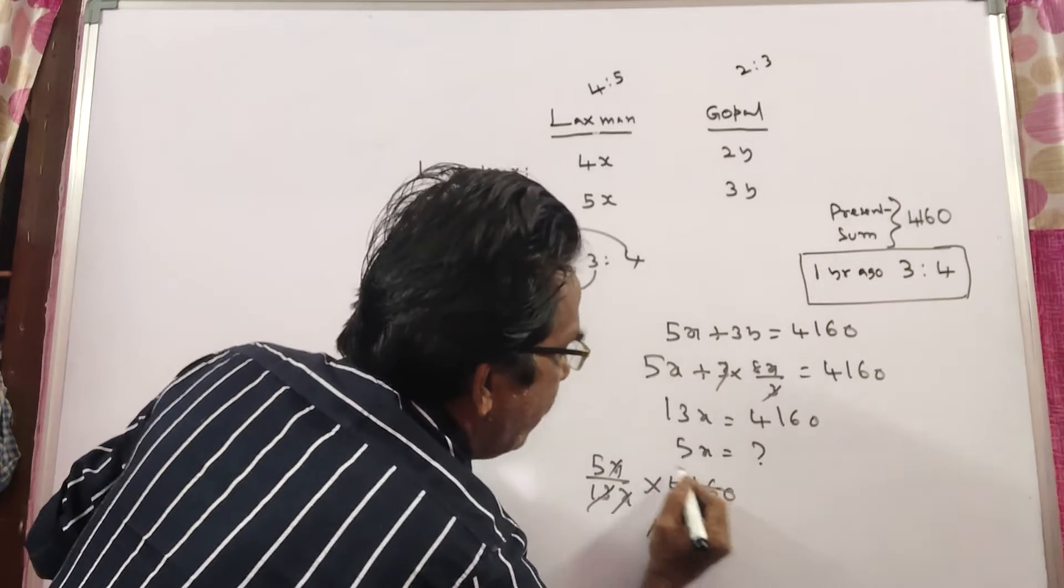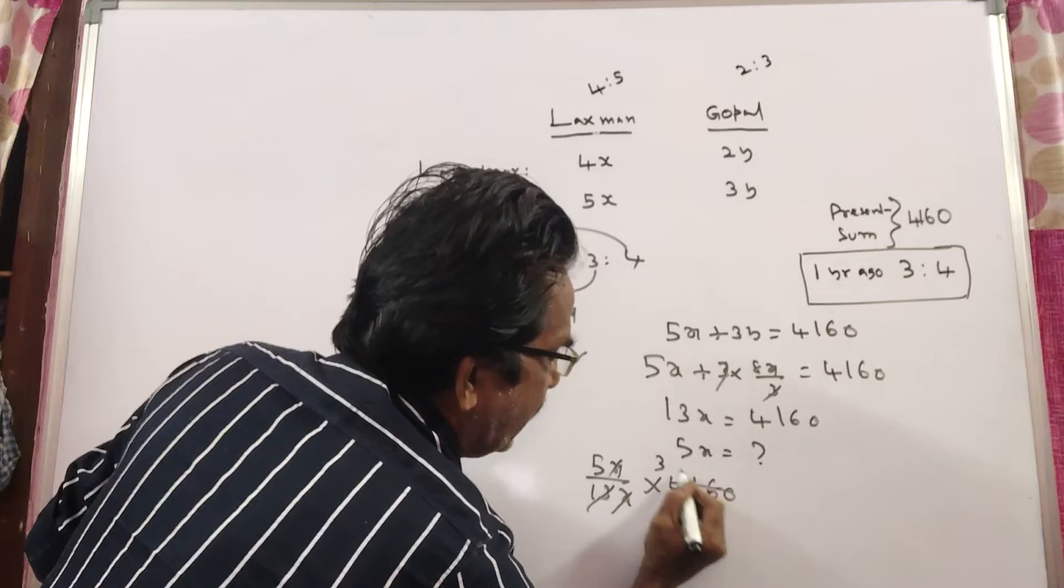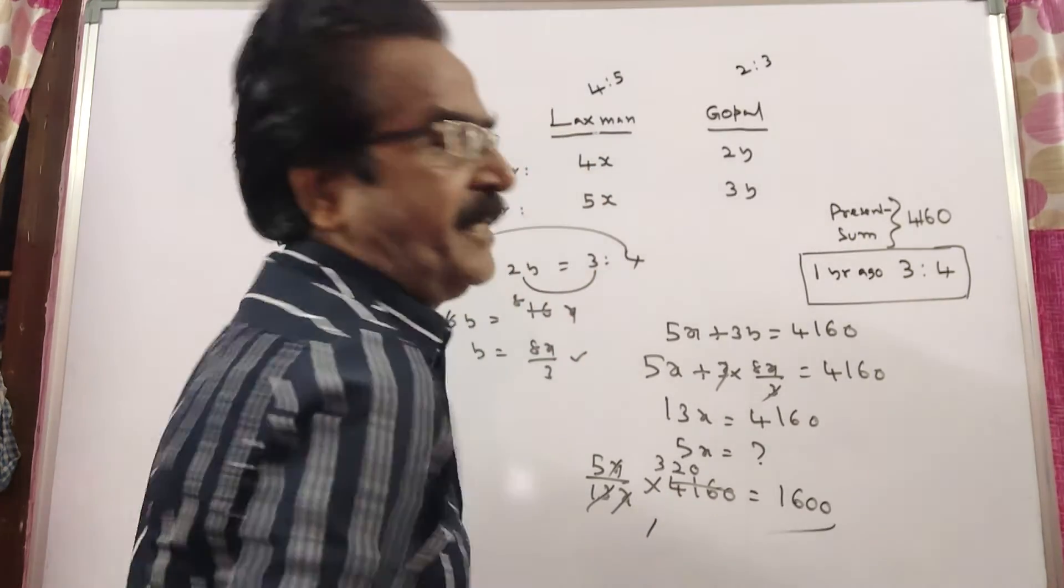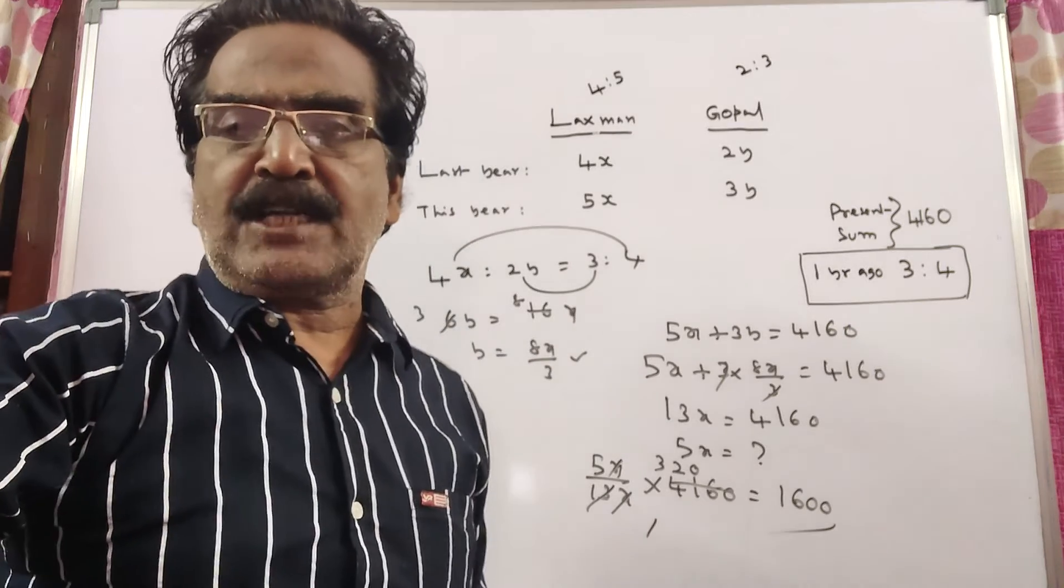13 goes into 39, 32. So, 5 into 320. 1600 is the present salary of Lakshman.